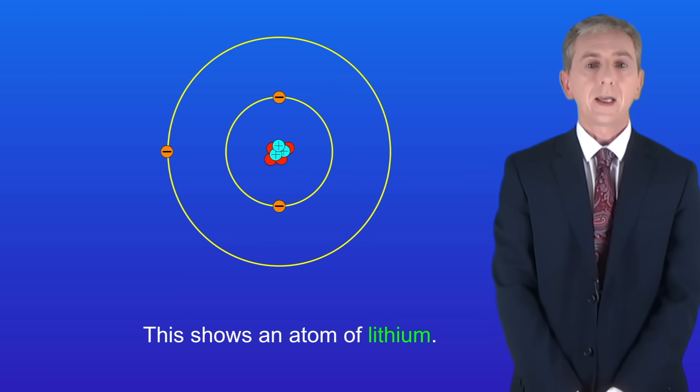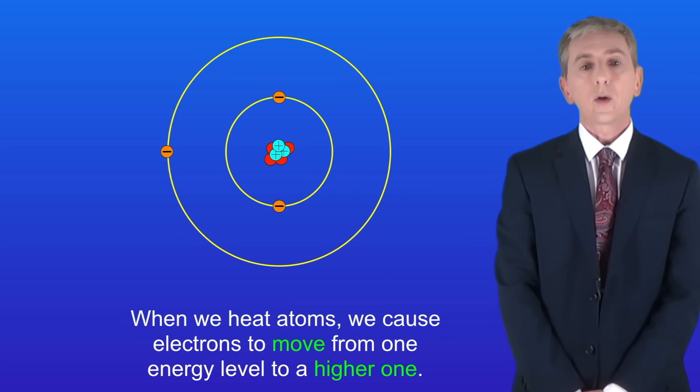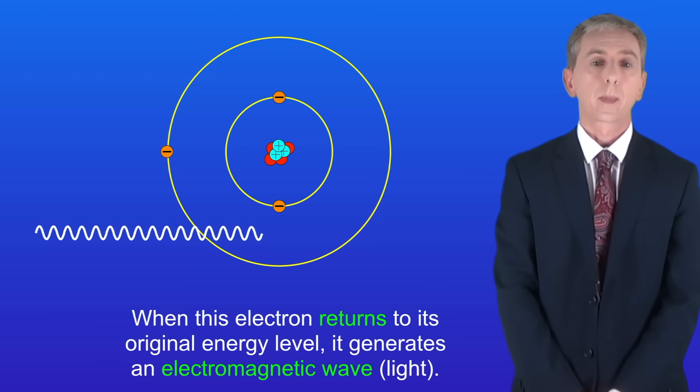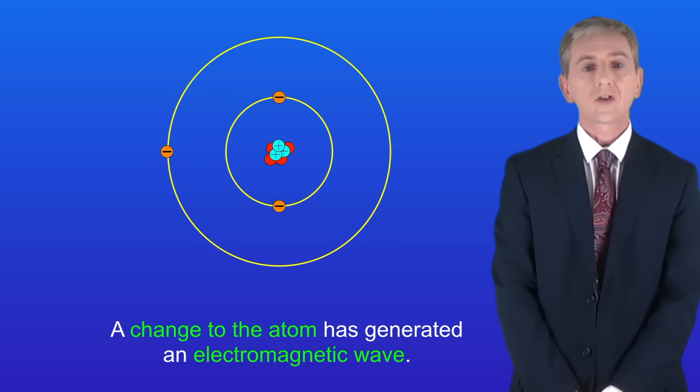So I'm showing you here an atom of lithium. When we heat atoms we cause electrons to move from one energy level to a higher one like this. When this electron returns to its original energy level it generates an electromagnetic wave. In this case light. So as you can see a change to the atom has generated an electromagnetic wave.